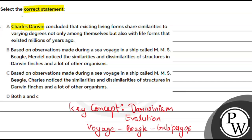The question says: Charles Darwin — Statement 1 says Charles Darwin concluded that existing life forms share similarities to varying degrees, not only among themselves but also with life forms that existed millions of years ago. This is correct because variations occur and heredity ensures those variations go forward in the population.